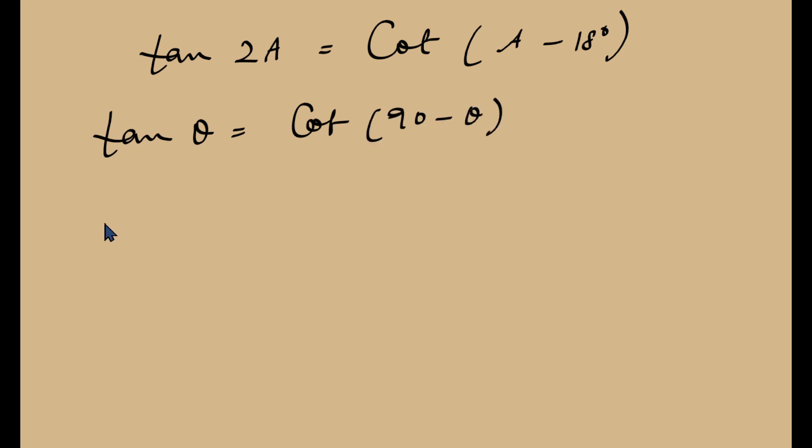So I can rewrite tan 2A as cotangent of 90 minus 2A. And it is justified if I write it because it was already specified that 2A is less than 90 degrees. So I can write cot of 90 degrees minus 2A. I am not going to get any negative angle. So since what have I done? Tan of 2A is cot of 90 minus 2A.